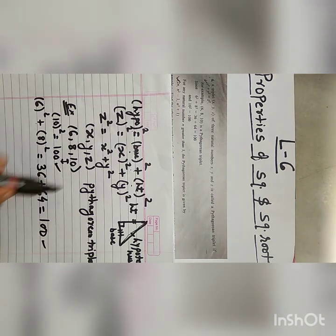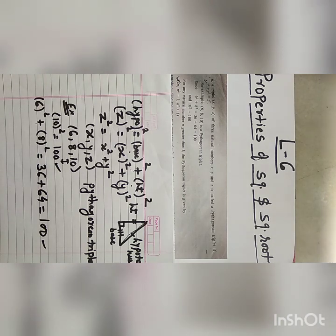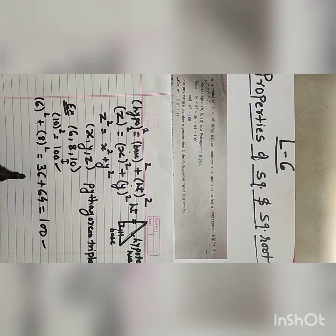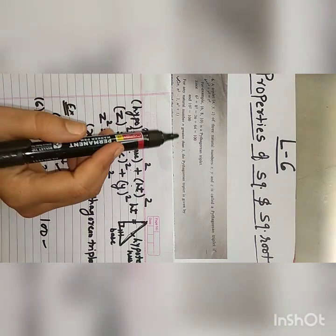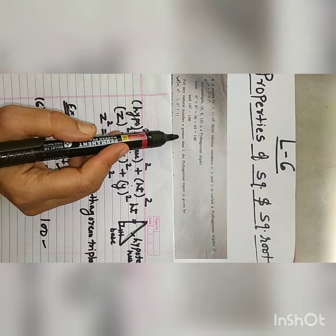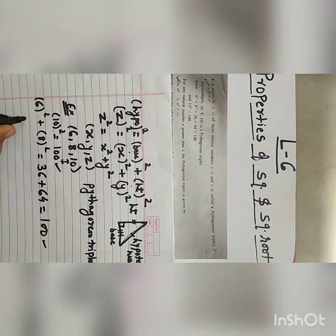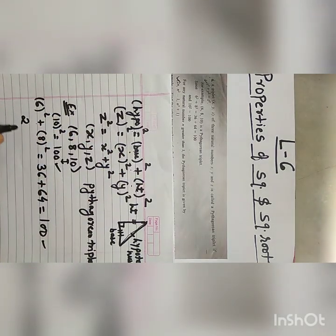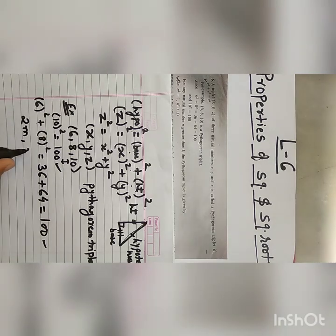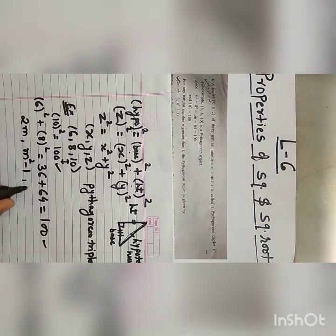With the help of this we can derive a formula to find out Pythagorean triplet members. For any natural number m greater than 1, the Pythagorean triplet will be 2m, m square minus 1, and m square plus 1. These are the three natural numbers by which we can form the Pythagorean triplet.